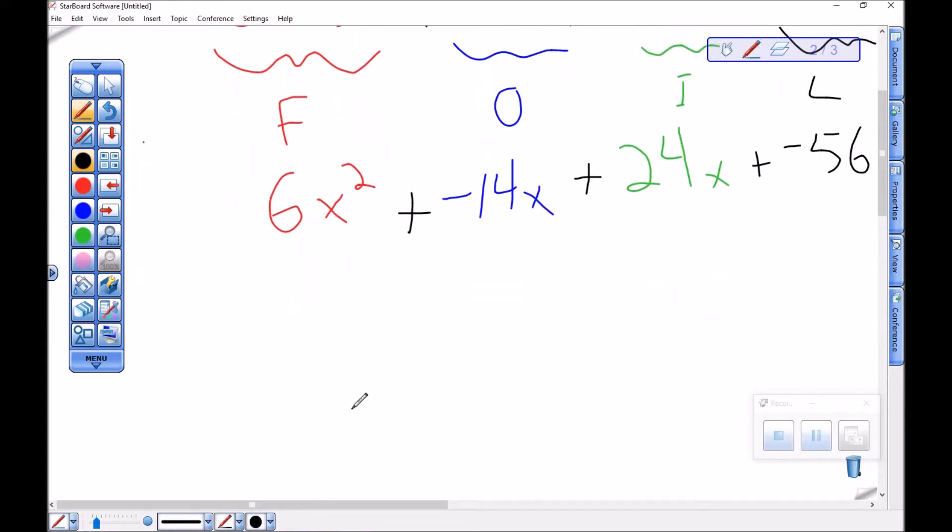Looks like I've got a couple of like terms here. I've got 6x squared, but then I have this guy and this guy are like terms. So a negative 14x plus 24x would be positive 10x. And then at the end I've just got minus 56.